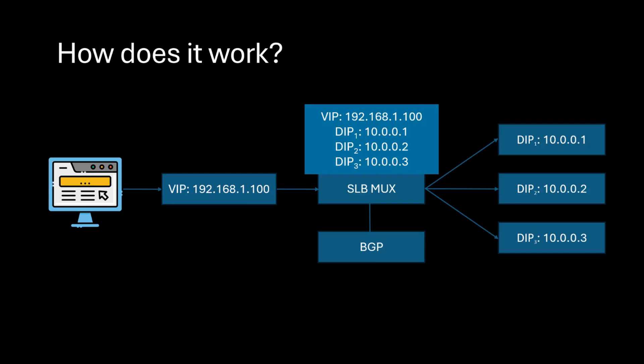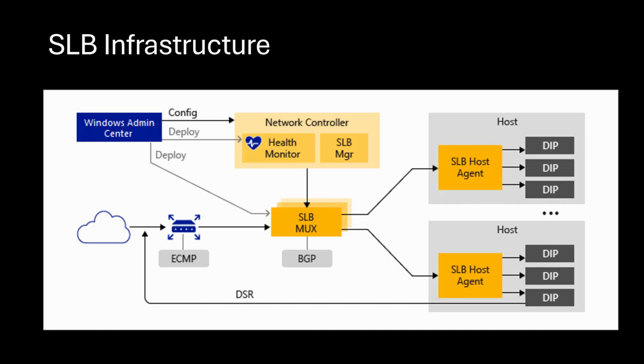So the top-of-rack switch receives a packet coming from the 192.168.1.100 VIP and sends it to the MUX VM. Since the MUX has the load balancing policies, it will know that if the packet is trying to reach virtual IP 192.168.1.100, then the DIPs associated with that VIP are 1001, 1002, and 1003. It will then use a load balancing algorithm to send the packet to one of the VMs hosting the DIPs — and that is essentially how SLB works.